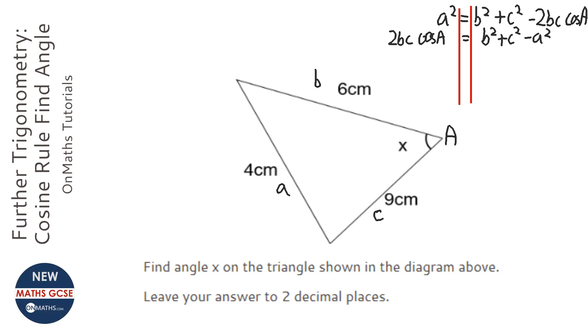And then I'm going to divide both sides by 2bc. So it's going to be b squared plus c squared minus a squared, all of that over 2bc. And then inverse cos both sides.